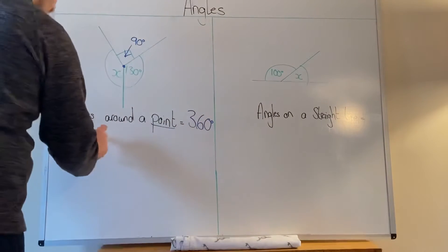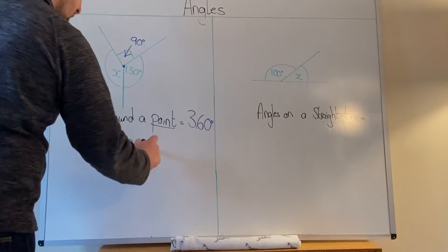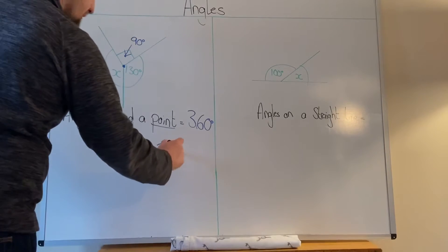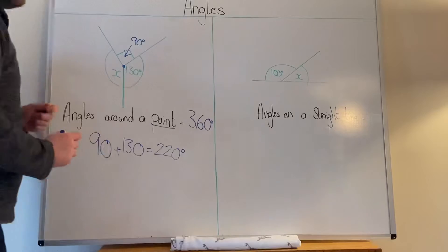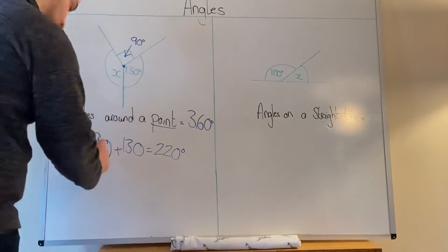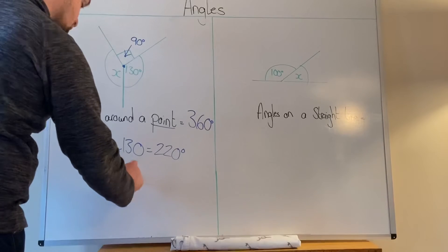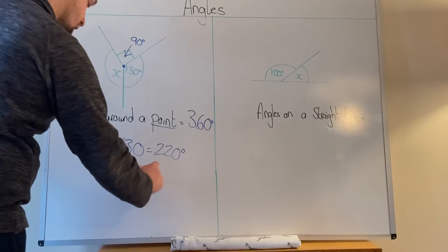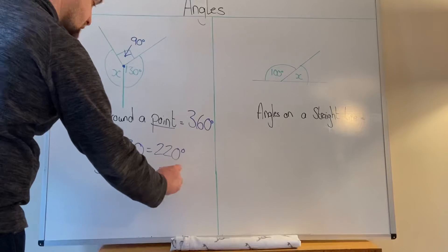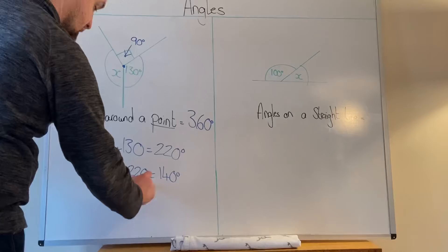So we've got 90 plus 130 equals 220. So we've added up everything that we've got. And now we need to take it away from 360 degrees. So we're going to do 360 minus 220 equals 140 degrees. So x equals 140 degrees.